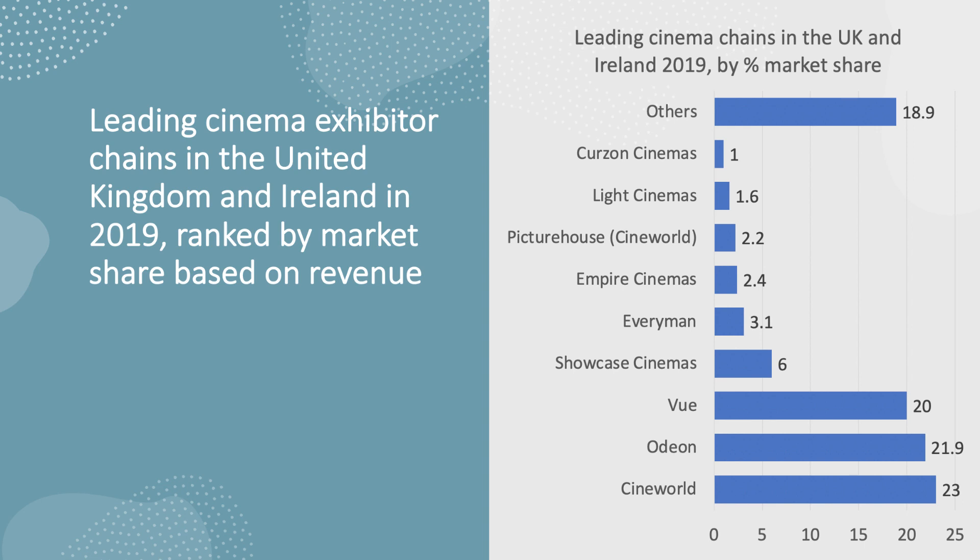This is an illustration of the concentration ratio using the leading cinema chains in the UK and Ireland in 2019, based on revenue from ticket sales. Vue, Odeon, and Cineworld clearly dominate the market — together those three have well over 60% of total revenue. Cineworld also owns the Picturehouse chain. So this sector is essentially an oligopoly. But the rise of Netflix, Disney Plus, and the pandemic represent significant challenges to cinemas, showing how market structure changes over time.